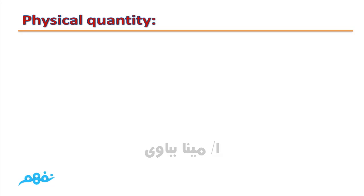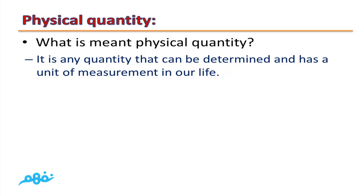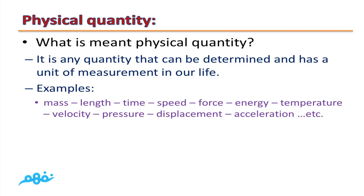What's meant by a Physical Quantity? It is any quantity that can be determined and has a unit of measurement in our life. For example: Mass is measured in kilograms. Length is measured in meters or kilometers. Time is measured in seconds or hours. Speed is measured in meters per second or kilometers per hour. Force is measured in Newtons. Energy is measured in joules.